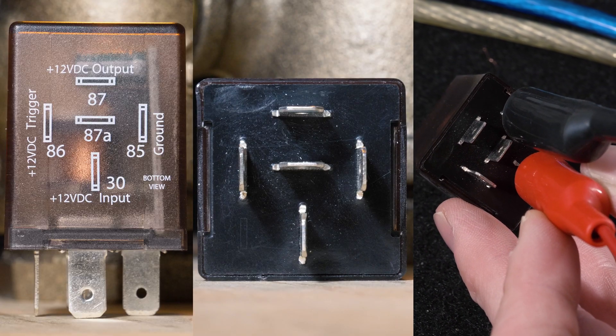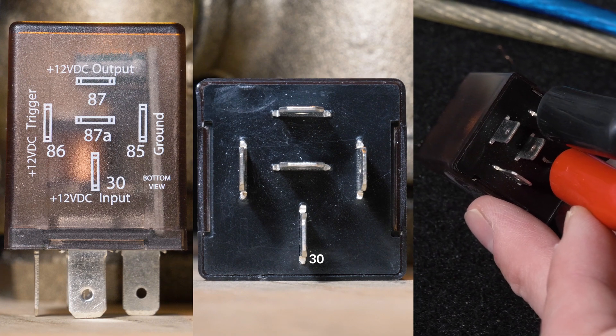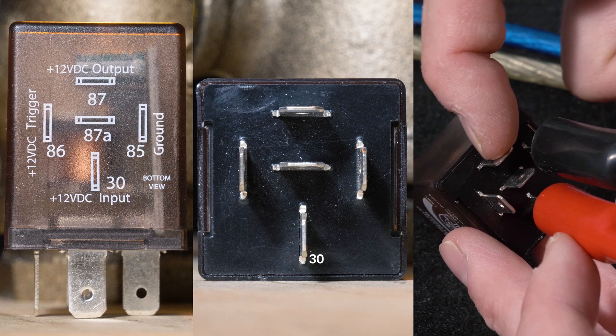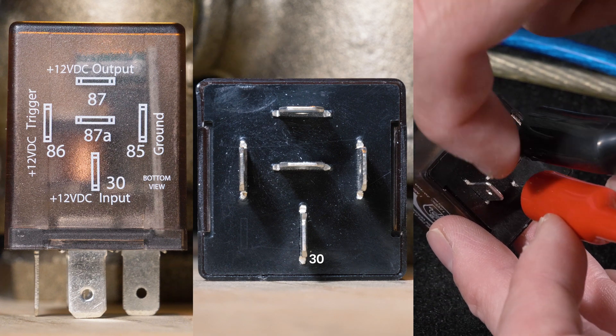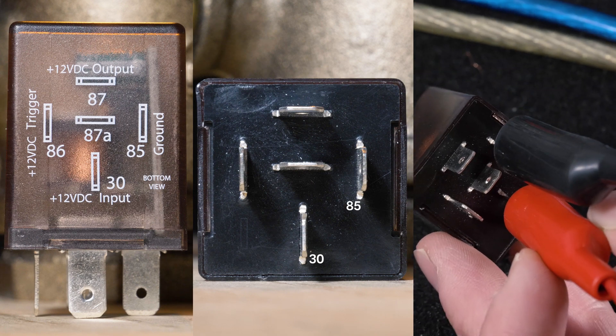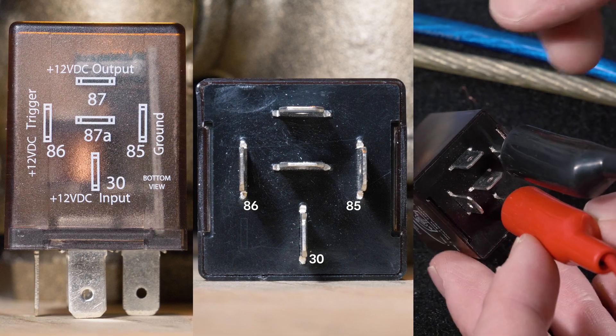Just like on the 509TD, pin 30 is our 12 volt constant. That's what powers the relay and the circuit and will provide an output here as a normally open contact. We'll provide 12 volts here as a normally closed contact. Pin 85 is our ground and pin 86 is our 12 volt trigger.